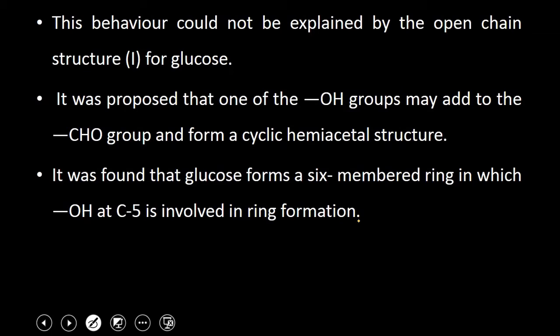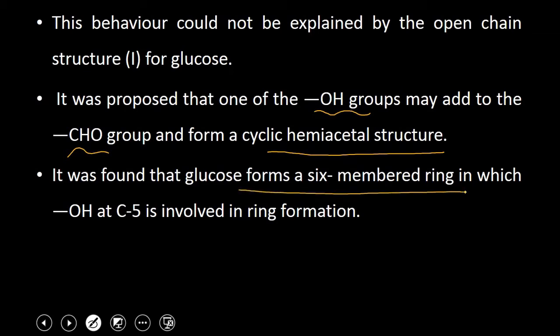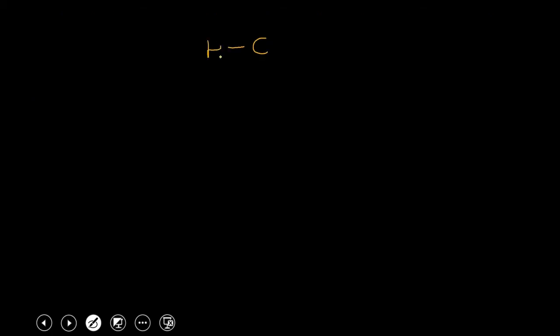So it was proposed that one of the OH groups may add to the CHO group and form a cyclic hemiacetal structure, which indicates that the CHO group is not present in free state. It was found that glucose forms a six-membered ring in which OH at C5 is involved in the ring formation. So the structure of glucose — this is the aldehyde group, the first carbon atom — then the second carbon atom.